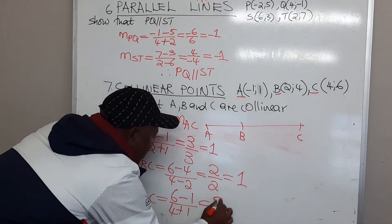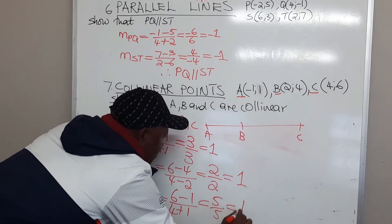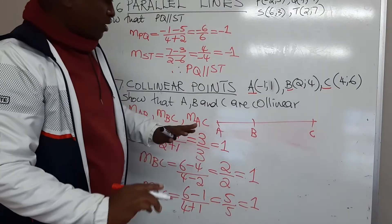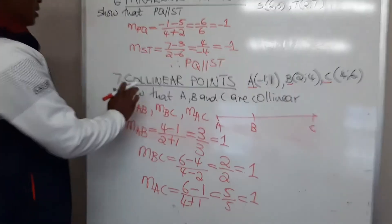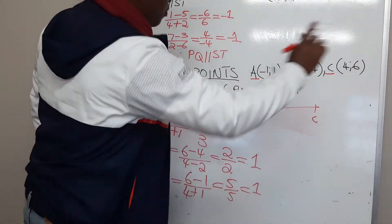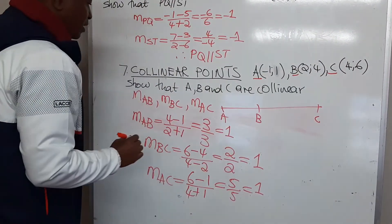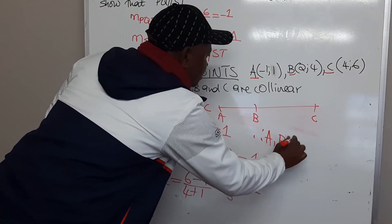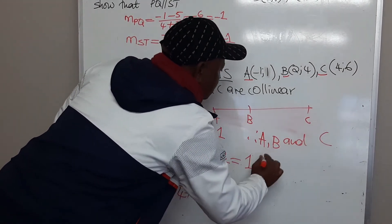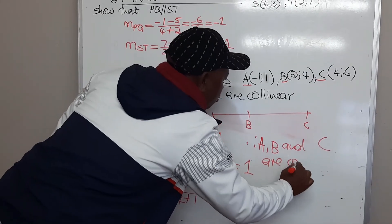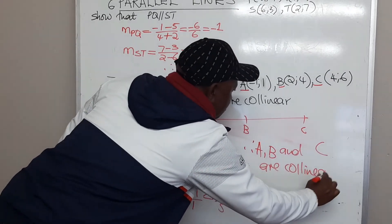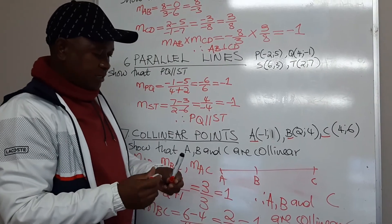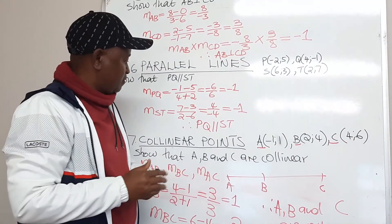This is 5 over 5, which gives us 1. Once the gradients are equal, we see the three points are falling on the same straight line. Therefore, A, B and C are collinear points. And that is the end of the lesson for today.